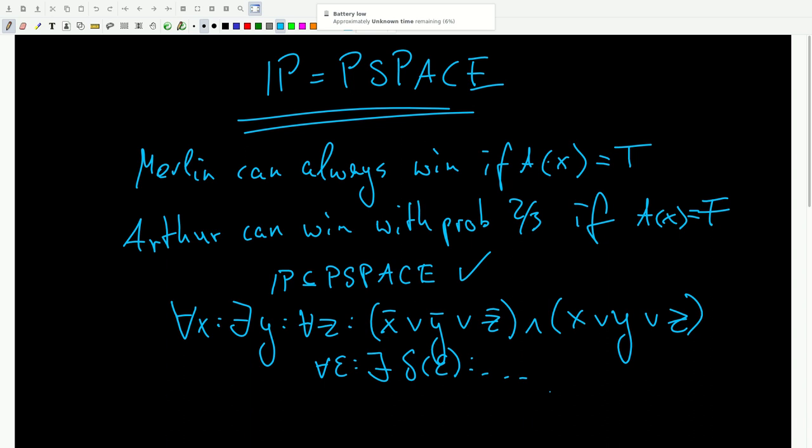The full details for why QSAT is p-space complete are somewhat tedious, but let me at least outline the reasoning. First, we can think of any p-space computation as simply checking which state, true or false, is reachable from the initial state of the program. In other words, an input x is accepted if and only if there exists a path from its initial state to the final state t in the computation graph.